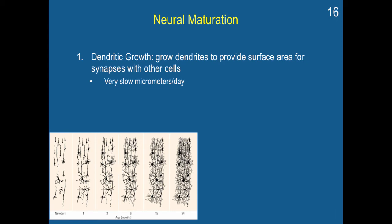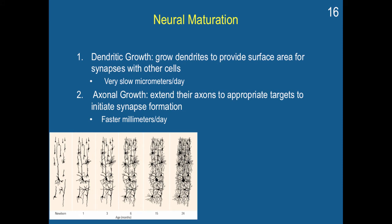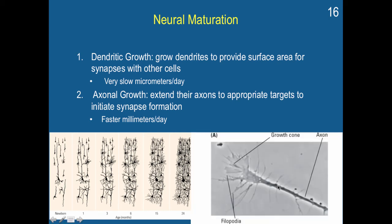Dendritic growth is very slow — on the order of micrometers per day. You also have axonal growth, where neurons extend their axons to appropriate targets to initiate synapse formation. Here you can see a neuron with axons moving to try to connect with each other. Here is an axon with a growth cone. When these axons grow, they send out growth cones with filopodia that detect other neurons and where they should connect, to start establishing connections with other neurons.